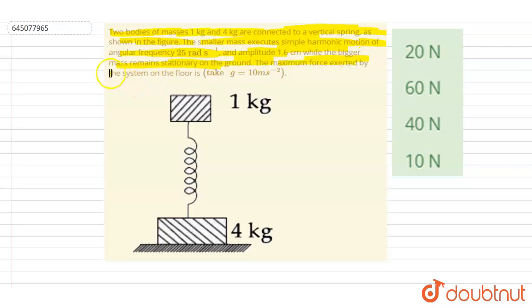If you see, it is given that the bigger mass remains stationary. So if the bigger mass remains stationary, this smaller mass will execute SHM, right? The smaller mass will execute SHM. So we want the maximum force exerted by the system on the floor - that is, we want this normal reaction. We want the maximum value of this normal reaction.